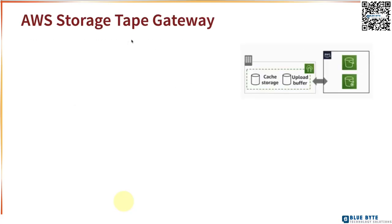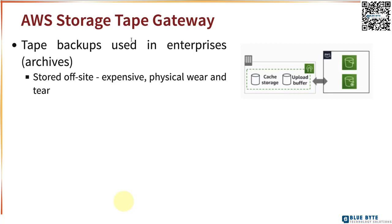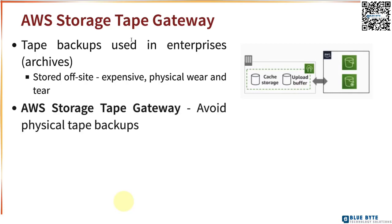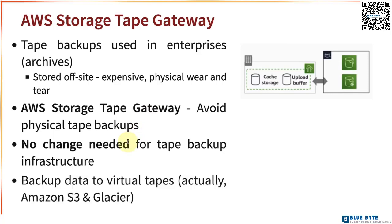The next option is AWS Storage Tape Gateway. Many enterprises today still use tape backups for archiving. These tape backups are typically stored off-site, the process is expensive, and the tapes are subject to physical wear and tear. If you want to avoid physical tape backups, you can go for AWS Storage Tape Gateway. The great thing is there is no change needed for your existing tape backup infrastructure — you can back up data to virtual tapes, and these virtual tapes are stored in Amazon S3 and Glacier.